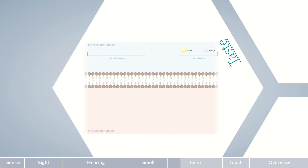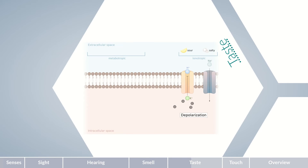The taste receptors for sour and salty tastes are ionotropic and directly depolarize the cell. The sour taste is mediated by potassium channels — the binding of extracellular protons causes these channels to alter their conformation and close, preventing the efflux of potassium ions. The resulting increased intracellular potassium concentration leads to positive polarization, causing the cell to depolarize.